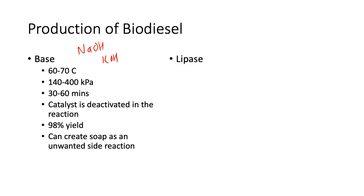The other catalyst you can use is a lipase, which is an enzyme that breaks down lipids (triglycerides) and attaches the methanol group for you. It's done at biological temperatures — no hotter than 37°C — which means you use much less energy to heat it up. It also runs at atmospheric pressure.